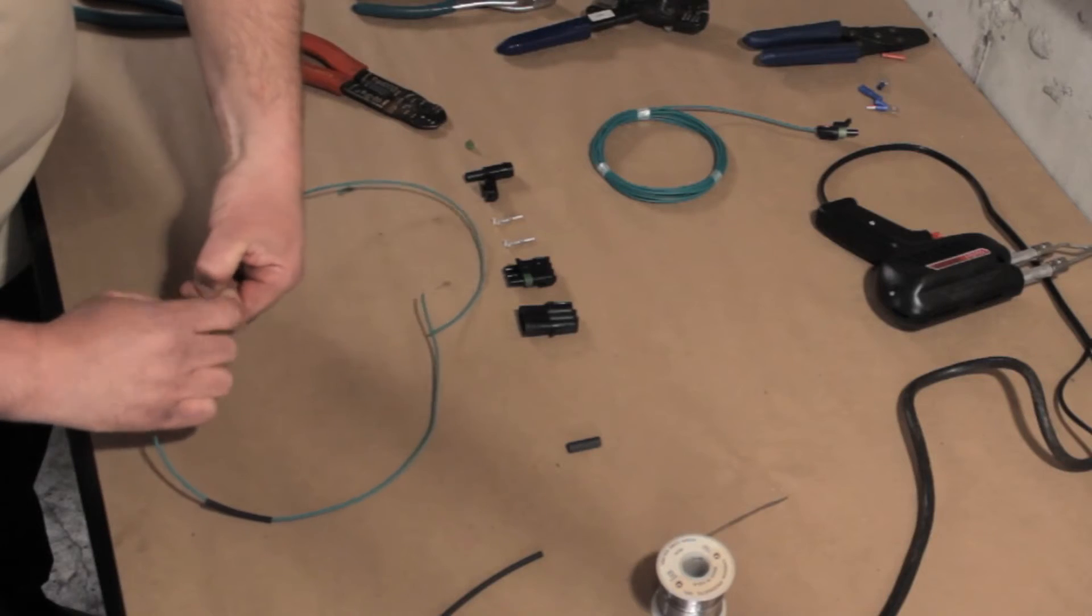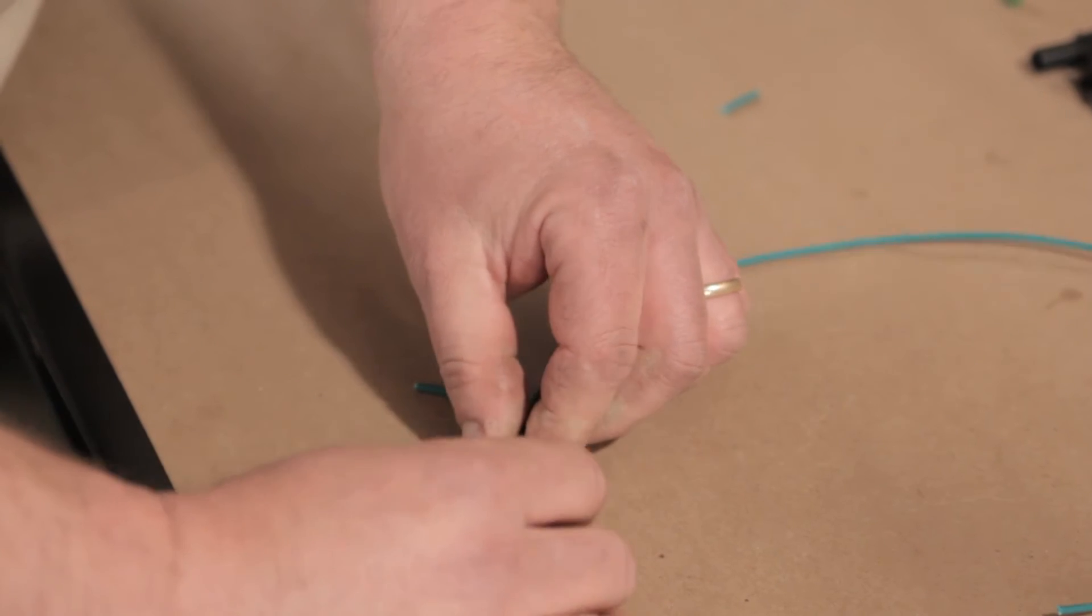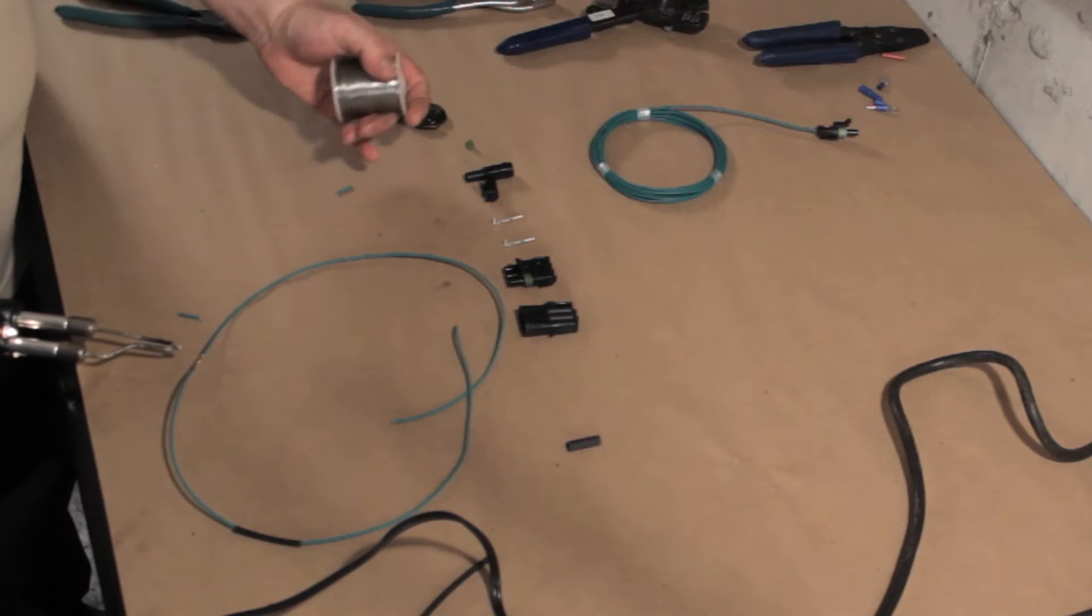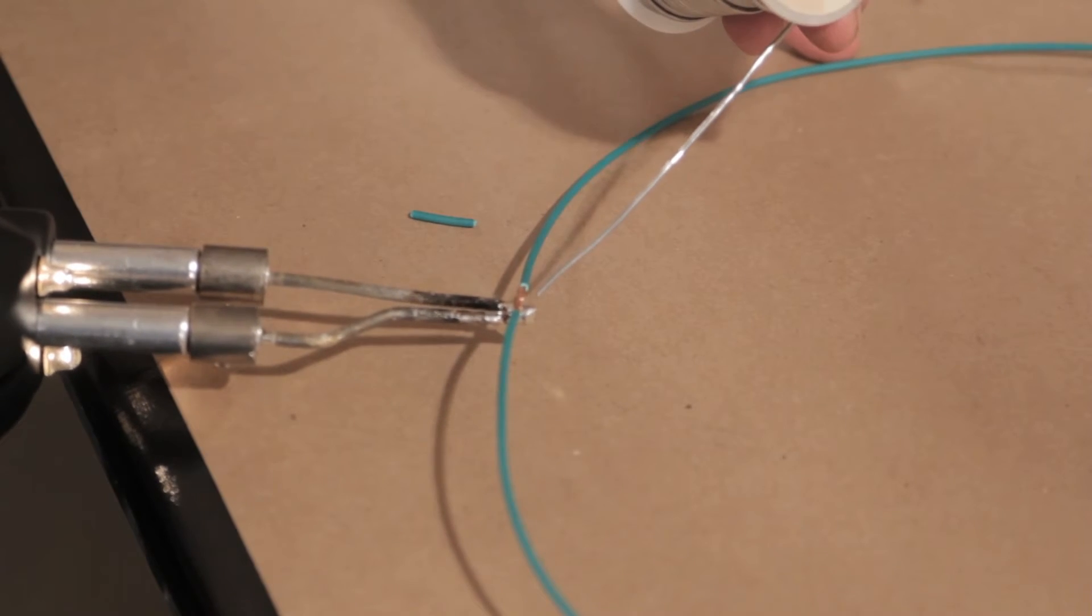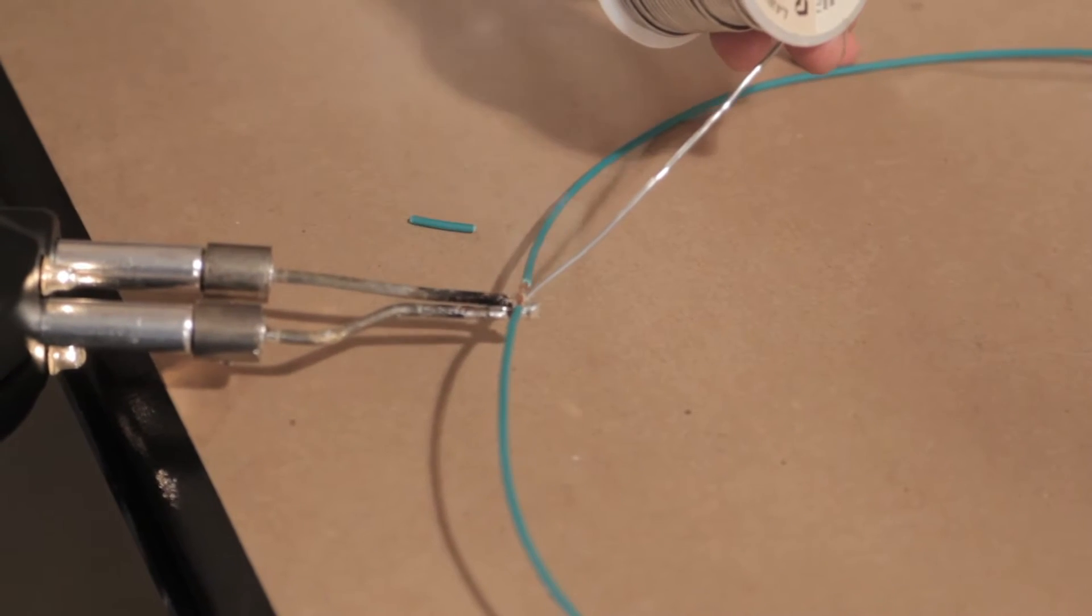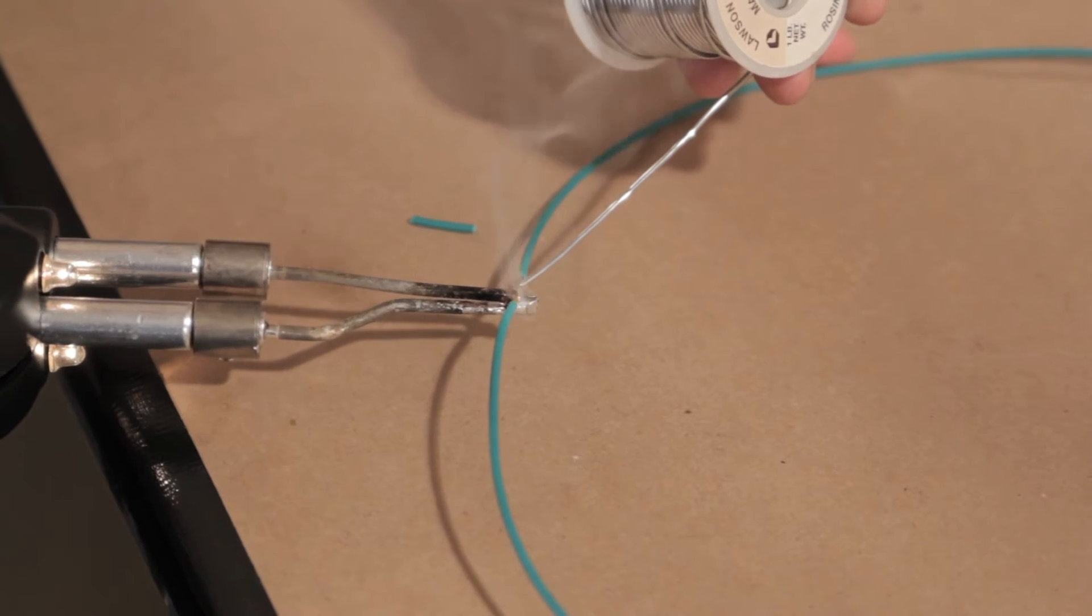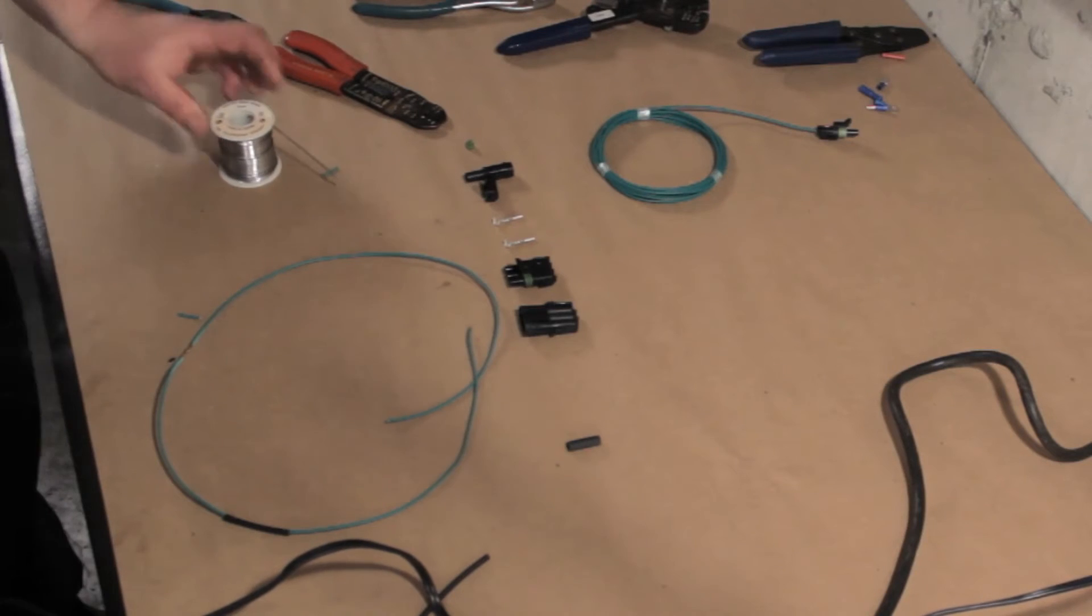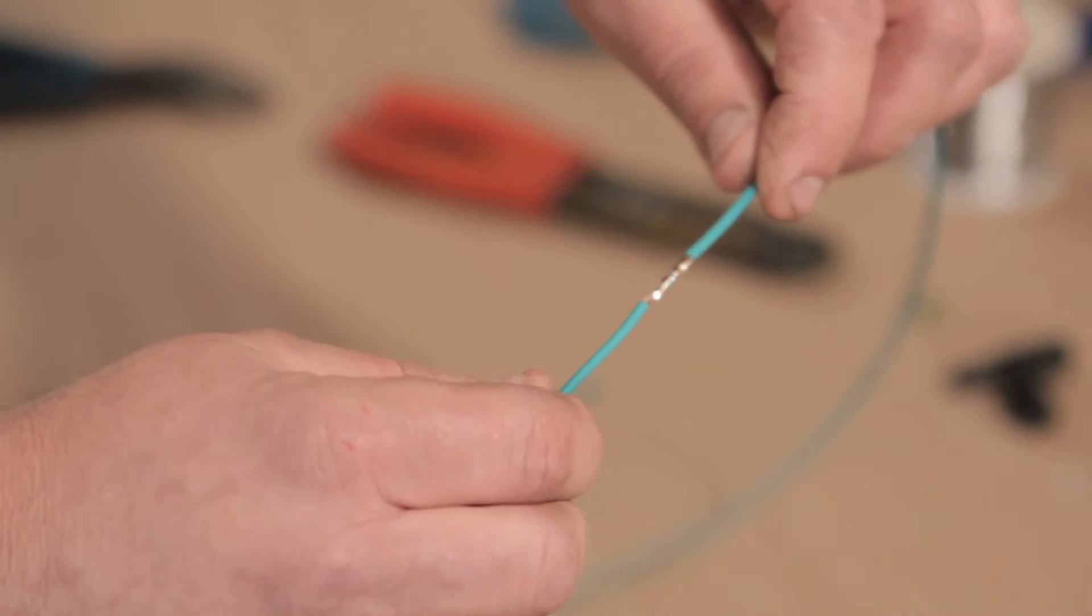And then take your soldering gun, get it warming up. If you touch the tip of the solder to the gun, it'll help to transfer the heat to the wire. Put enough solder on there to coat it, let it cool off a bit.